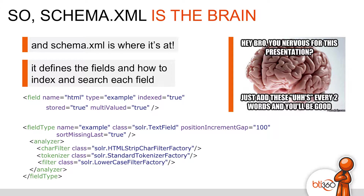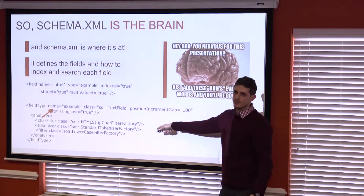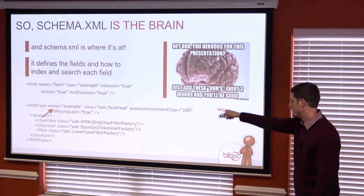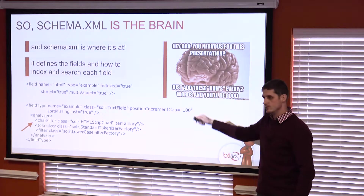This is an example of what you might find in schema.xml to identify a field called HTML. It's named HTML and has all these other attributes. They help identify the field called HTML within Solr. Right now it's pointed to have a type of 'example,' and you can see there's a field type identified called 'example.' So that field called HTML is defined by this. This is how Solr's brain figures out what HTML means — an analyzer that does HTML stripping and lowercasing.